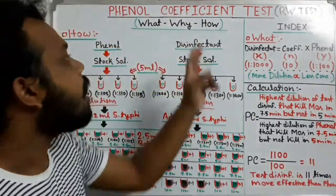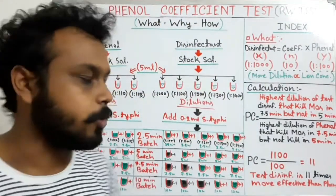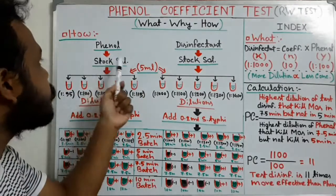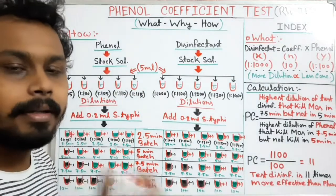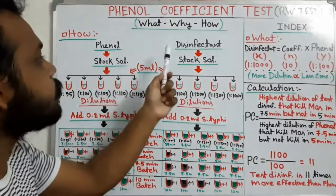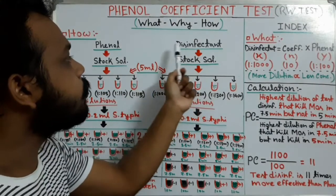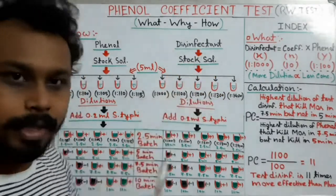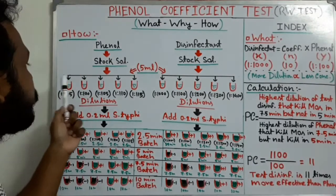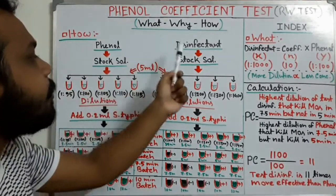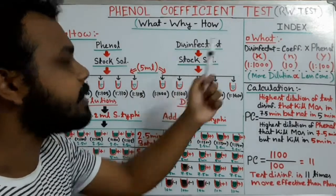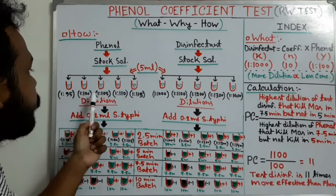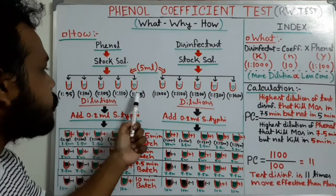Now we will discuss how the phenol coefficient test is performed. First, we take raw phenol and make a stock solution by adding sterile distilled water. At the same time, we take the unknown disinfectant and make a stock solution. Then we prepare different dilutions of phenol: 1:95, 1:100, 1:105, 1:110, and 1:115.